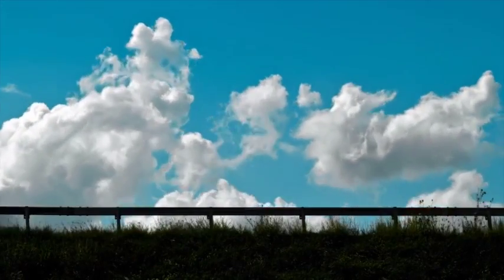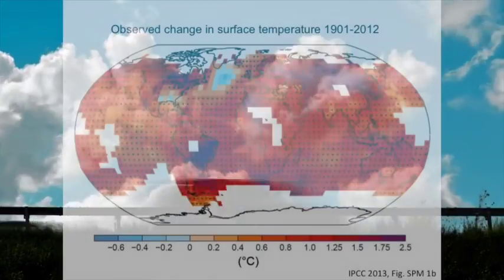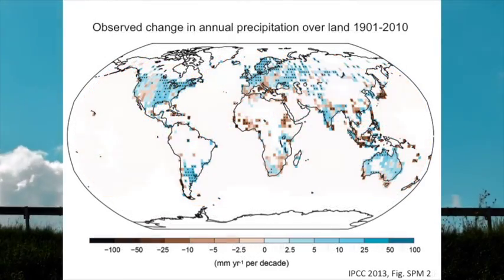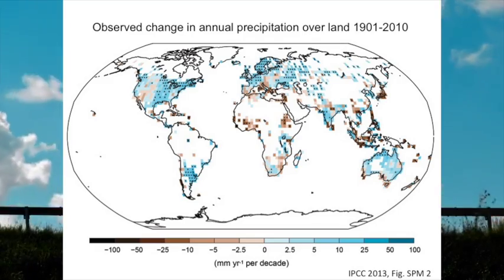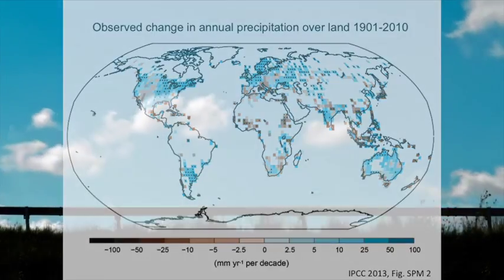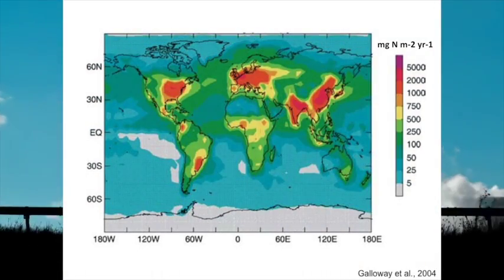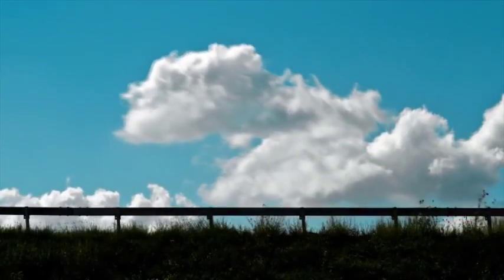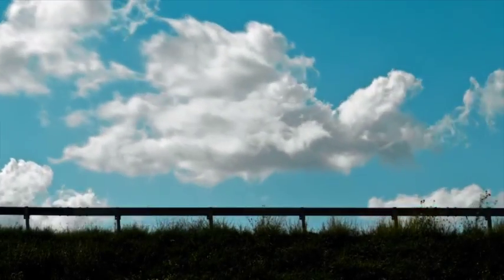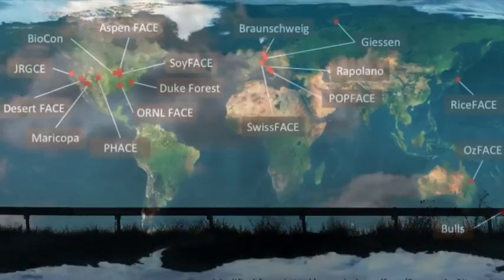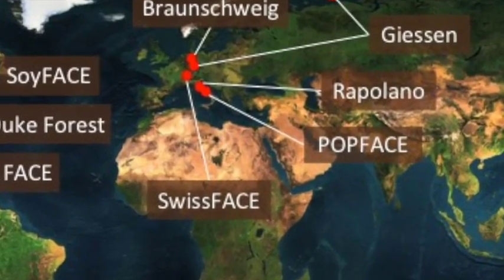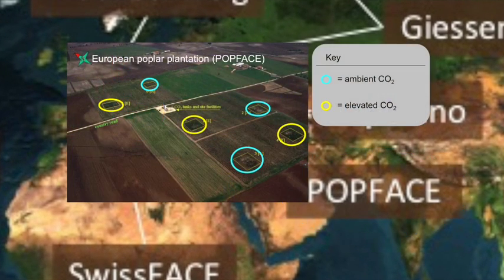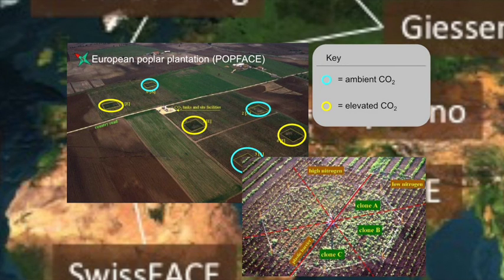Global carbon dioxide concentrations are not changing in isolation. There are other global changes occurring as a result of rising carbon dioxide, such as changing temperature and precipitation regimes. Other global changes are occurring simultaneously with rising carbon dioxide, such as nitrogen deposition. In order to better represent expected future conditions, many FACE experiments include treatments in addition to elevated atmospheric carbon dioxide. At the POPFACE experiment in central Italy, plots receiving either ambient or elevated carbon dioxide were divided in half, with each half receiving a different level of nitrogen fertilizer.